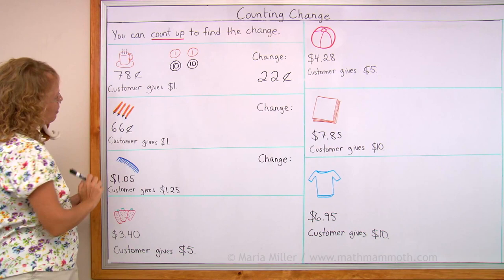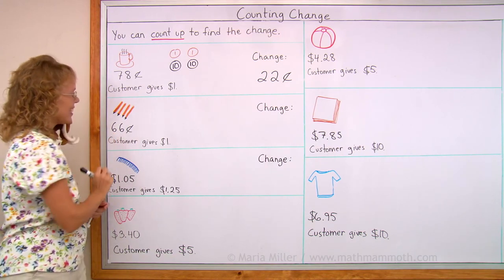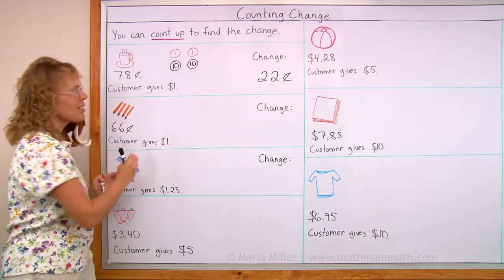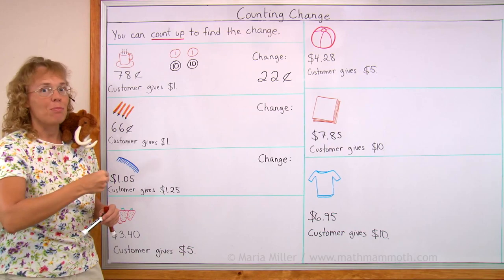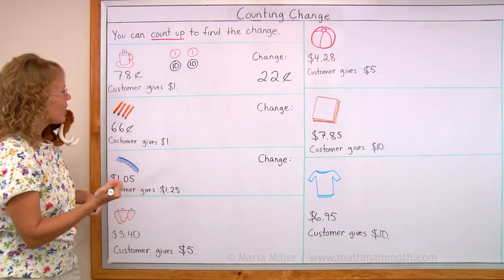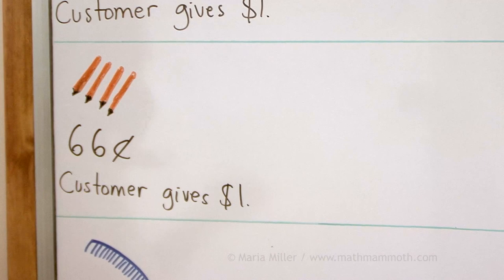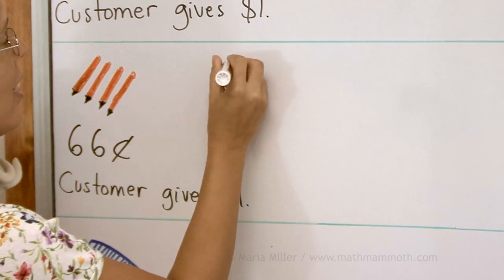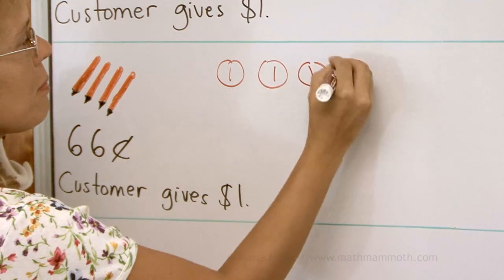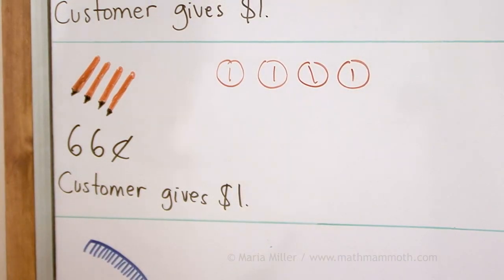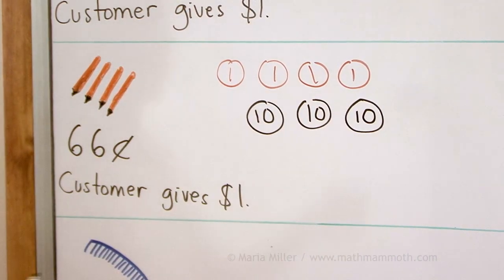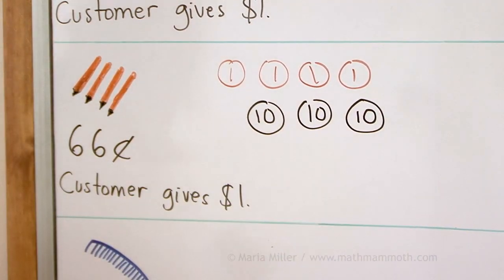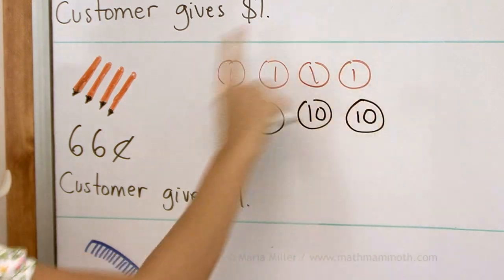Let's try it again. Here's a set of pencils cost 66 cents. The customer gives one dollar or 100 cents to pay for it. And now we start counting from 66 up towards 100. So 66, first you want to use some pennies to go to 70. Let's take four pennies. That would make 70. Then from 70 I can go 10, 10, and 10. Or a dime here, another, and another. And now that goes from 70 to 80 to 90 to 100. And so this is my total change, 34 cents.